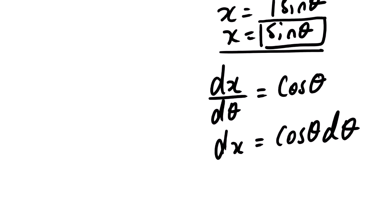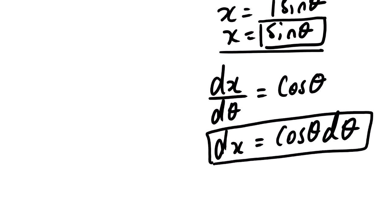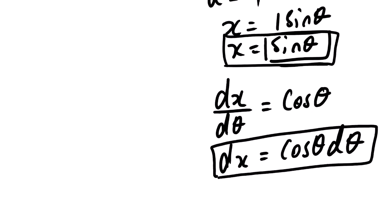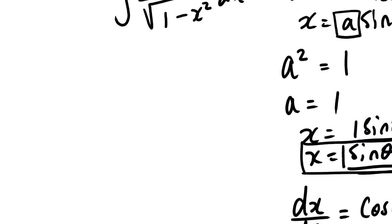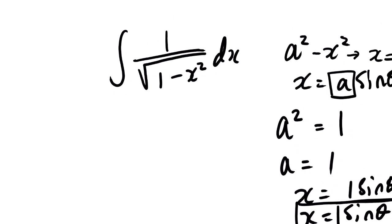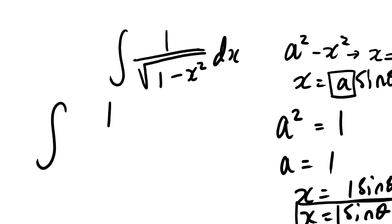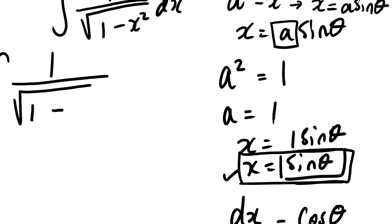Now these two results — x equals sin theta and dx equals cos theta d theta — are what we need. Going back to our question, we take the integral of 1 over the square root of 1 minus x squared dx, and substitute x with sin theta.